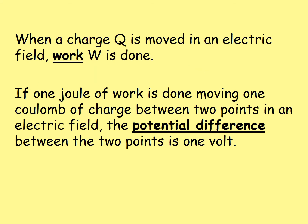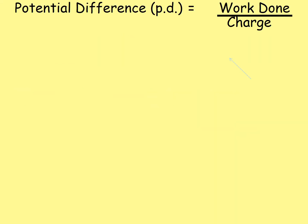When a charge Q is moved in an electric field, work W is done. If one joule of work is done moving one coulomb of charge between two points in an electric field, the potential difference between the two points is 1 volt. The potential difference, PD, is equal to the work done divided by the charge: V = W/Q, written on the relationship sheet as W = QV.